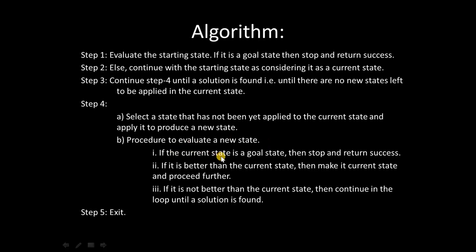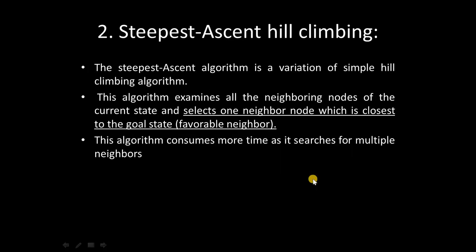If the new state is better than the current state — that is, its value is higher — then make it the current state by reassigning current state to that new state and proceed further. If the value of the new state is lower than the current state, it is not better, so continue in the loop and go to the next neighbor. This procedure repeats until a solution is found. This is the simple hill climbing algorithm.